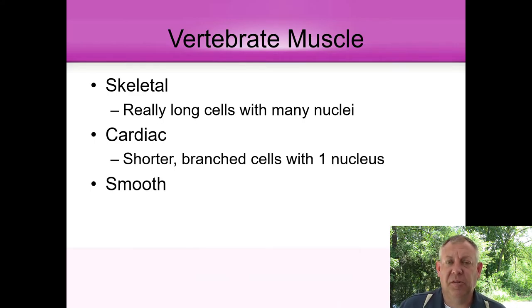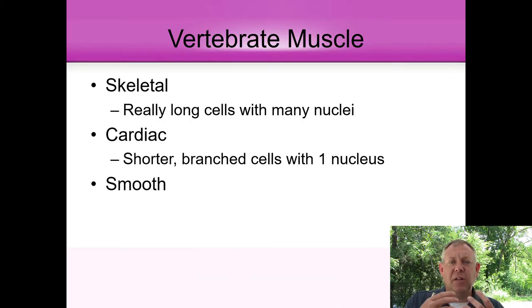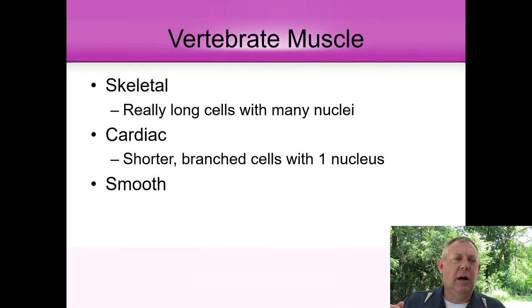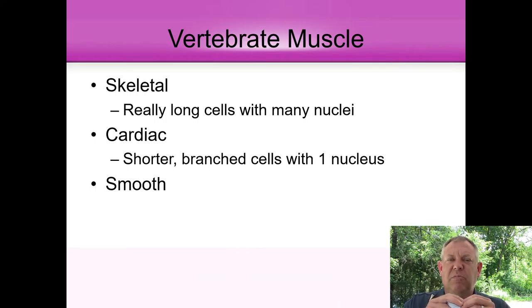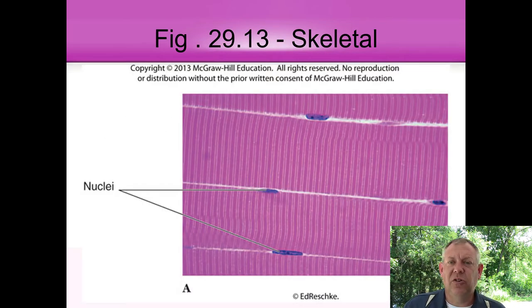In vertebrates you've got basically three kinds of muscle: skeletal muscle, cardiac muscle, and smooth muscle. They have a little different anatomy. Skeletal muscles are really long. We have this idea that cells need to be small, and that's true for most cells, but muscle cells are very long and they're multi-nucleate — they've got many nuclei. Cardiac cells are going to be much shorter, they're branched, and they only have one nucleus per cell.